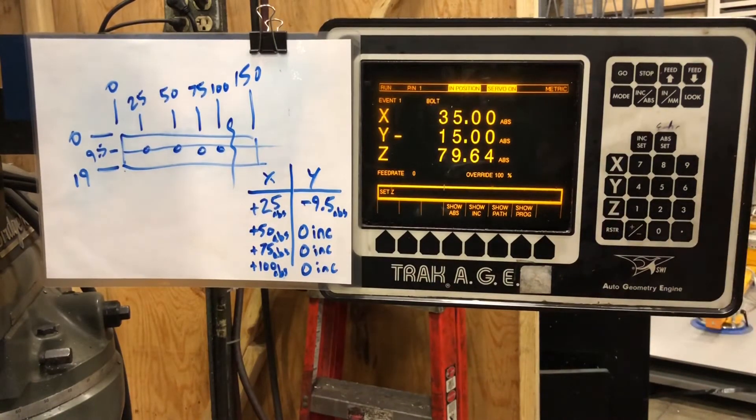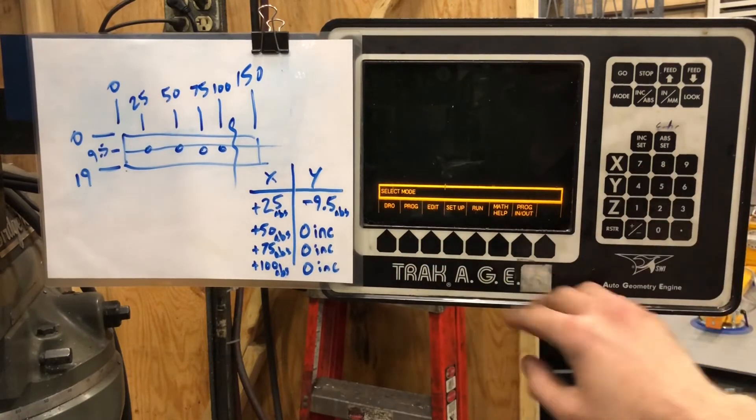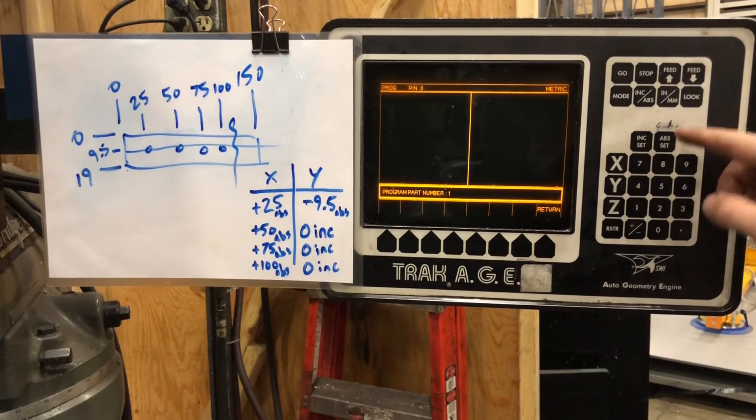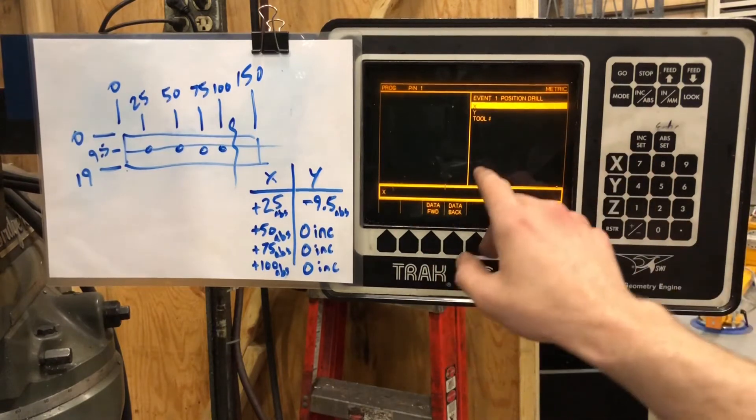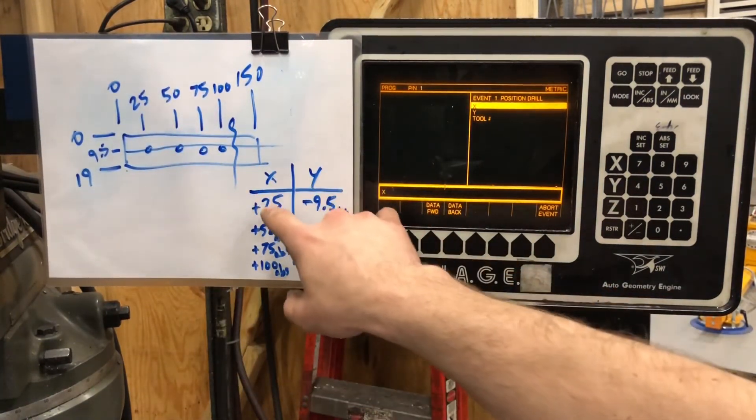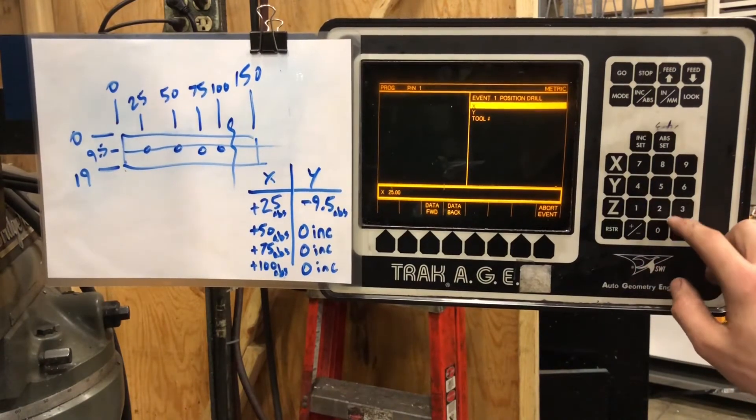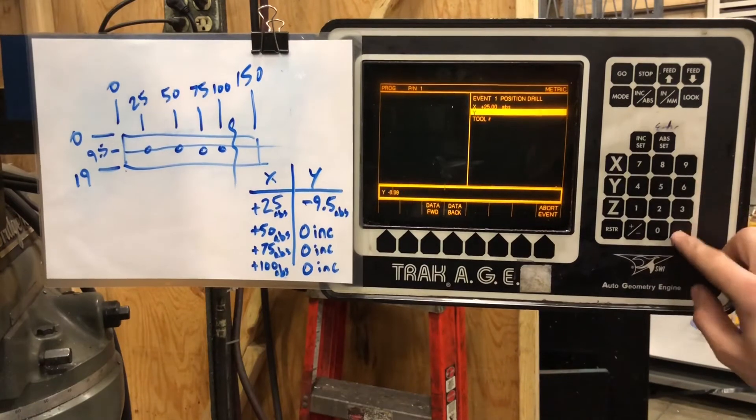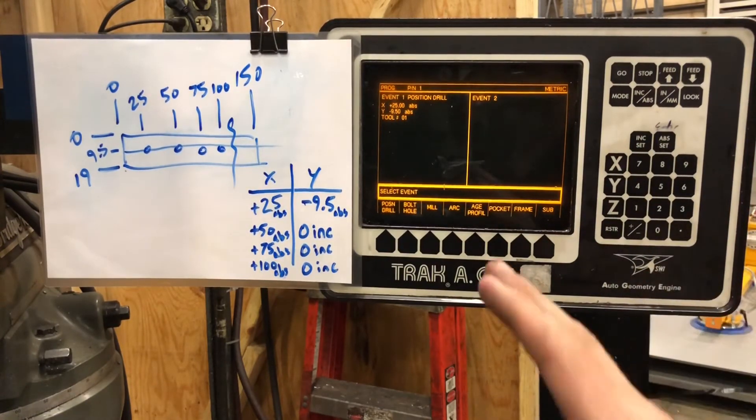So we already have our zero picked up in the top left corner. I have a program in right now, so to delete that, press mode, edit, erase program, yes - wipe that out. So we'll start fresh. Program, we'll call this number 1. ABS ABS absolute set - that's basically our enter button. Now we're going to do position drill. It's asking the X location and the Y location. Very simple. Our first X location, if we look at our drawing, is plus 25. If we go back and reference our handwritten print, it shows plus 25 ABS, so 25 decimal enter, plus 25 ABS. Our Y minus 9.5 absolute, enter. Over the tool number because we're not doing a program that is using multiple tools with different offsets.